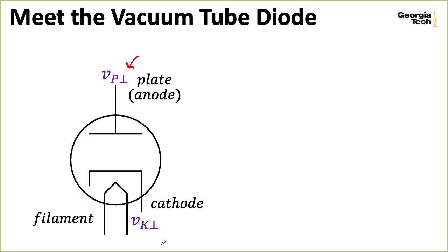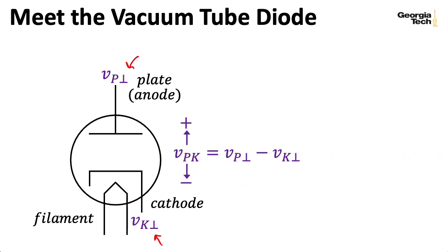The upside-down T's represent ground, so we're measuring the voltage of the plate with respect to ground and the cathode with respect to ground, and a little bit later I'll talk about why I want to emphasize that distinction. I'm using the upside-down T here instead of G because later we're going to use G to stand for grid.